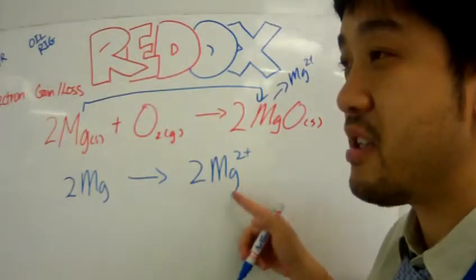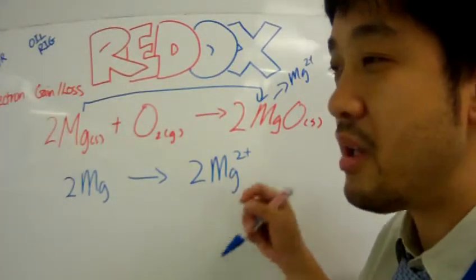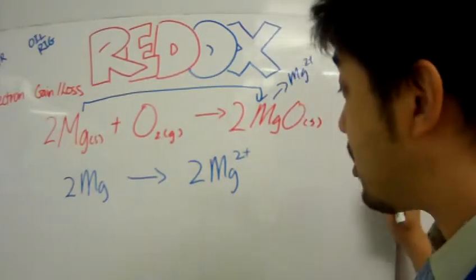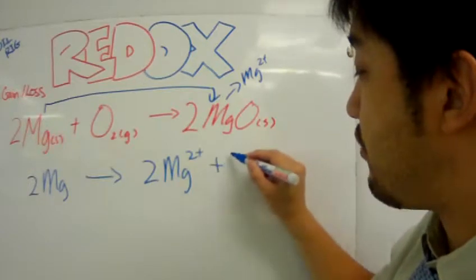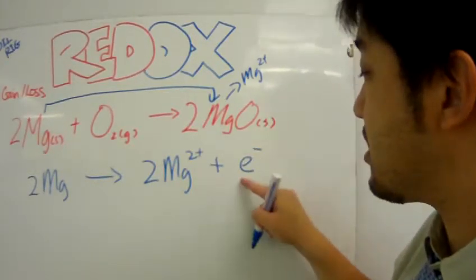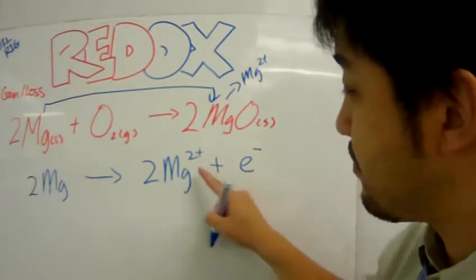This is an ion, and so it has two less electrons in it. So, where did the electrons go? Well, it went to oxygen. So, in effect, what happened was magnesium lost electrons.